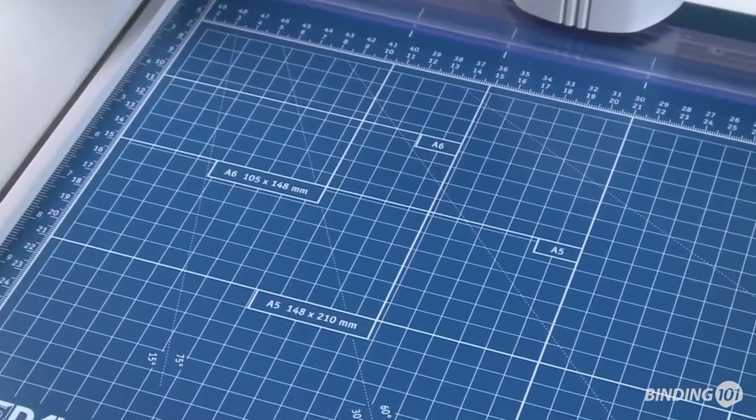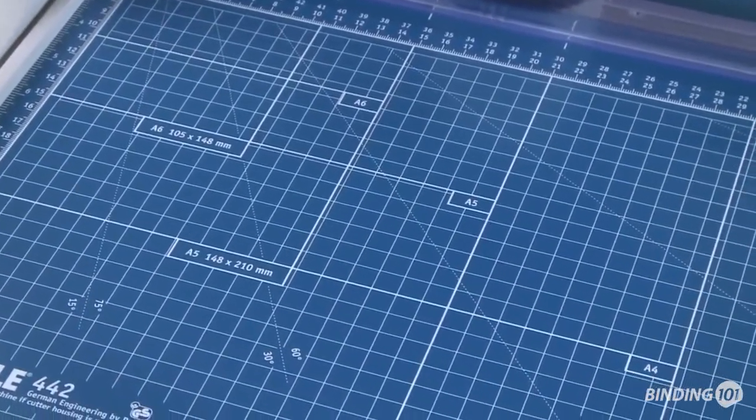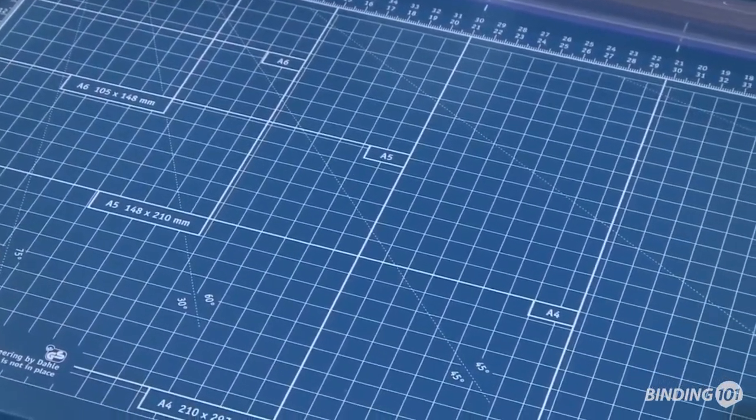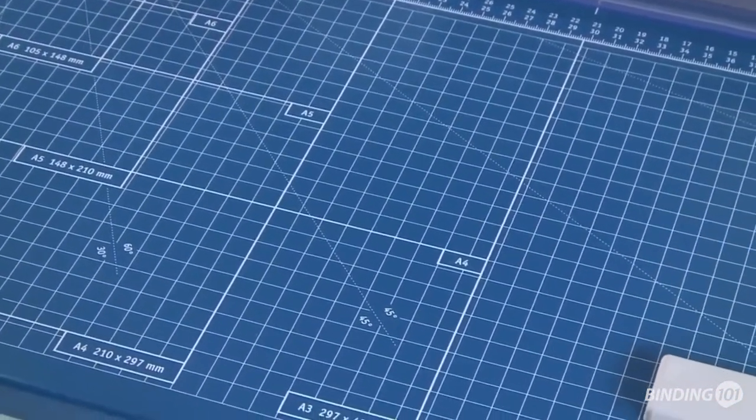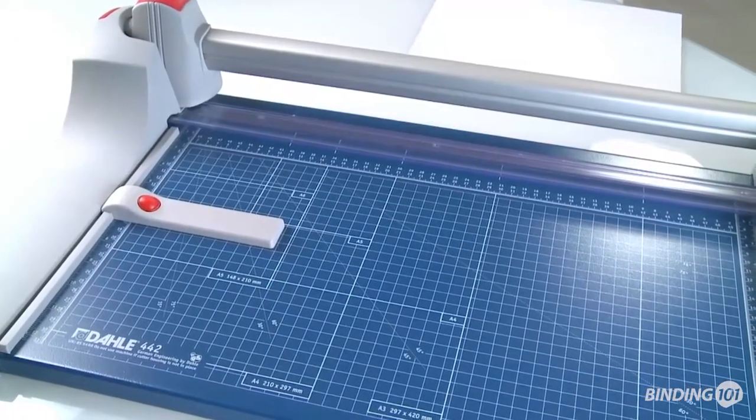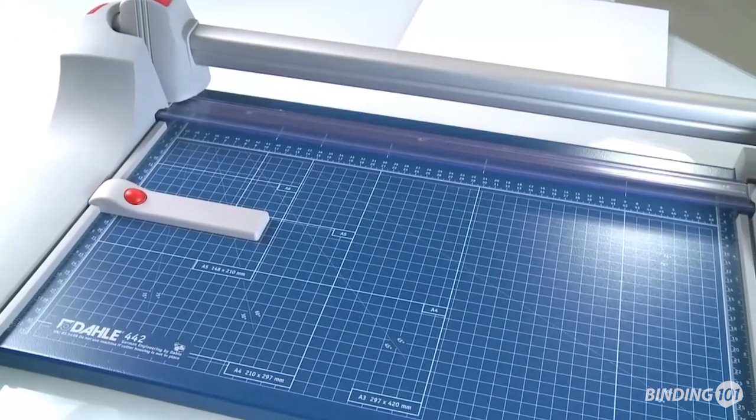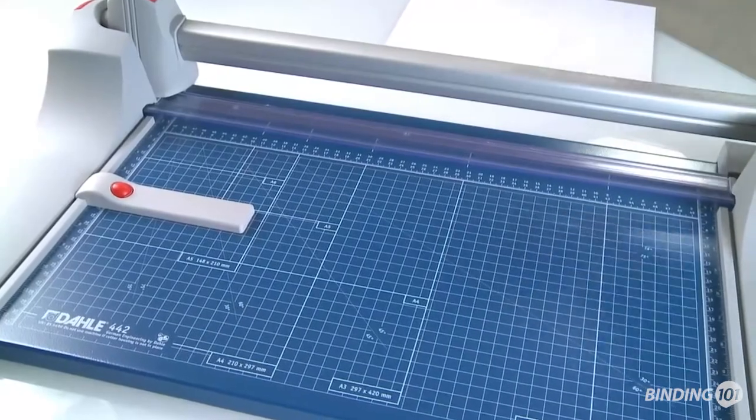Various format lines allow you to position cutting stock quickly and accurately at all times. Two scale bars marked in millimeters are guaranteed to provide an exact 90-degree cut.